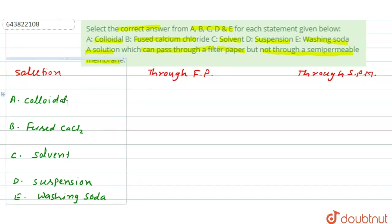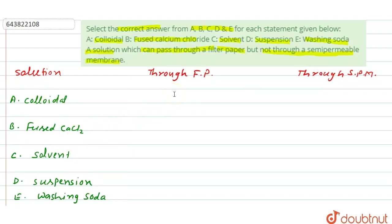For a colloid, the size of colloidal particles is small. They can pass through filter paper but not through a semi-permeable membrane. The dispersed phase particles in a colloidal solution are small enough to pass through filter paper, but the pore size of the semi-permeable membrane is smaller than the colloidal particle size, so they cannot pass through the SPM.